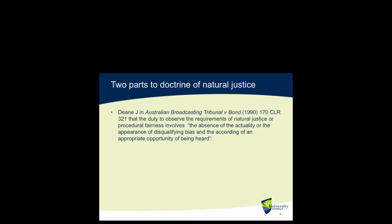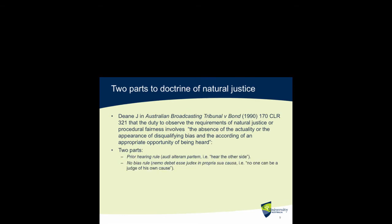There are two parts to the doctrine of natural justice. These were stated by Justice Dean in the case of Australian Broadcasting Tribunal v Punt, where he said the duty to observe the requirements of natural justice or procedural fairness involves: first, the absence of the actuality or appearance of disqualifying bias; and second, the according of an appropriate opportunity to be heard. These two parts correspond to the prior hearing rule — audi alteram partem, meaning 'hear the other side' — and the no bias rule — nemo debet esse judex in propria sua causa, meaning 'no one can be a judge of his own cause.'